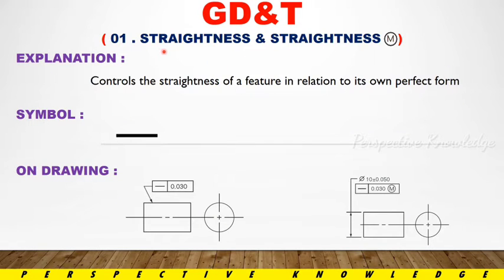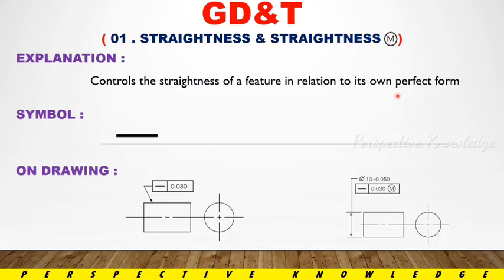For GD&T, the first feature is Straightness. If it shows M in a circle, it represents the maximum material condition. Straightness controls the straightness of a feature in relation to its own perfect form. If a component is straight or not, we measure it. If it is identified, it is straightness.